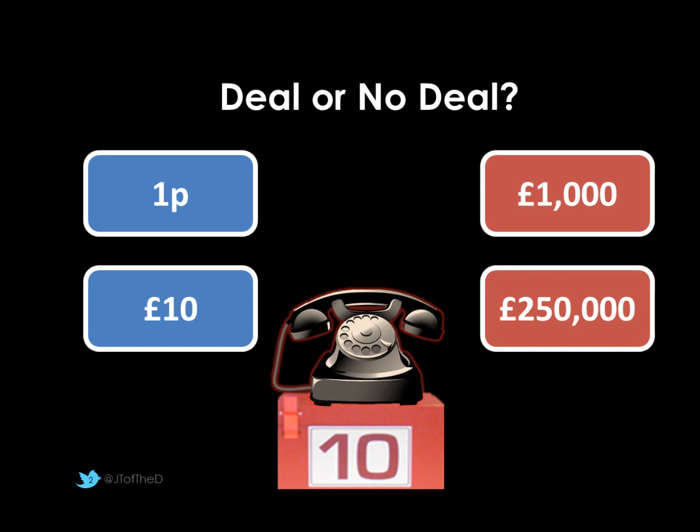They don't know what's inside, and at this stage of the game our player has got left either 1 pence in their box, £10, £1,000, or £250,000 — that cool quarter of a million top prize. The player doesn't know what's inside, so they're playing a game trying to work out what might be in there. At any point they can either keep playing and take whatever's in the box, or the banker will ring them and offer a sum of money to try and encourage them to stop playing and take the offer, or to keep playing.